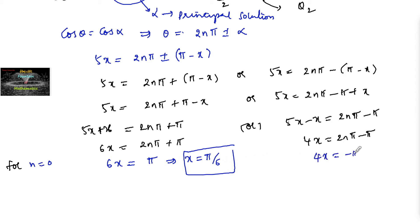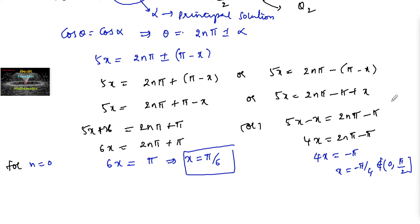From the second case with n = 0: 4x = -π, so x = -π/4, which does not belong to (0, π/2), so we will not include this value.